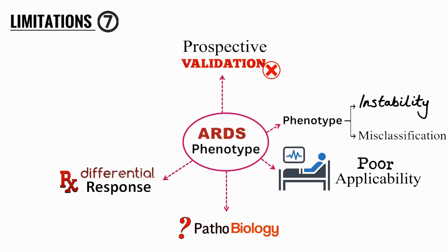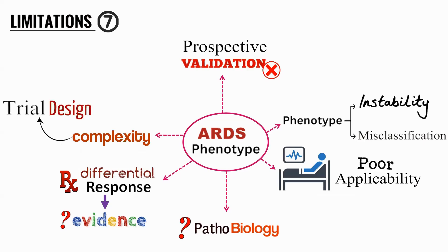There is no evidence to suggest that targeting P1 with one treatment and P2 with another leads to favorable outcomes. It has not been ascertained that treatment targeting hypoinflammatory ARDS leads to good outcomes, or that treatment targeting hyperinflammatory ARDS leads to better outcomes. We don't have data for that. All trials, as I mentioned, are of small size, so you cannot sub-fragment them and derive any logical conclusion.